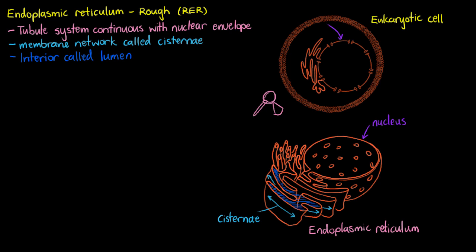I haven't actually said so far why we call it the rough endoplasmic reticulum or what its job is. So let's talk about that right now. Why is it called rough? Well, if you can see, I'm drawing all of these red dots all over the outer membrane of our endoplasmic reticulum, which are going to be ribosomes.